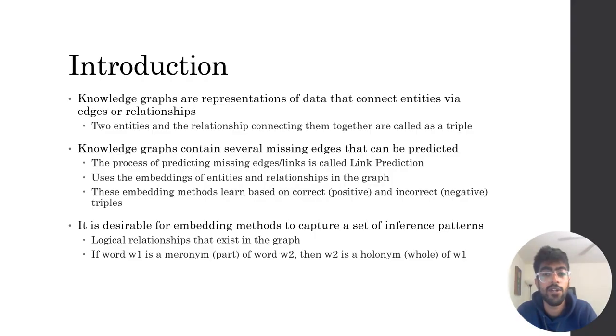To get started, let's talk about what is a knowledge graph. Knowledge graphs are representations of data that connect entities via edges or relationships. Knowledge graphs contain several missing edges that can be predicted, and this process of predicting the edges is called link prediction.